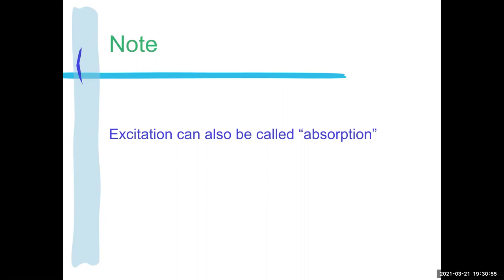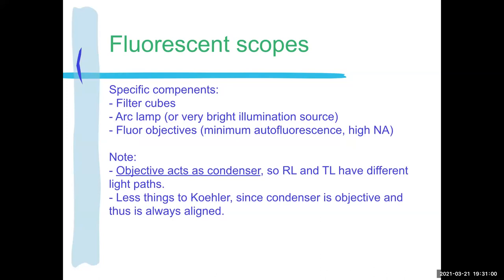On this scope we're going to need filter cubes to control the color of light that we're giving the fluorophore. We need an arc lamp in an old-school fluorescence scope — basically a super bright illumination source. These are still around. There are lots of safety rules: you need to turn it on and keep it on for almost an hour, and off for an hour — that's the rule around arc lamps.